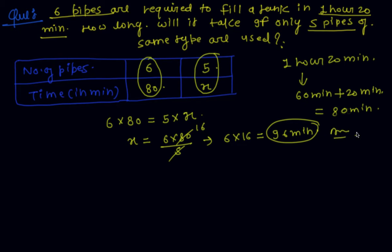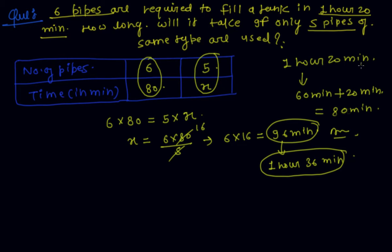This is the required answer. If the answer is required in hours and minutes, convert 96 minutes: that equals 1 hour 36 minutes. I hope you understand this example. Now I take one more example to understand the whole concept of indirect proportion.